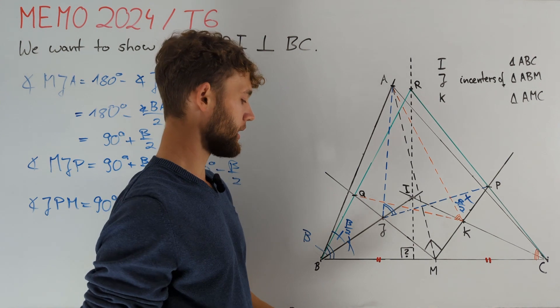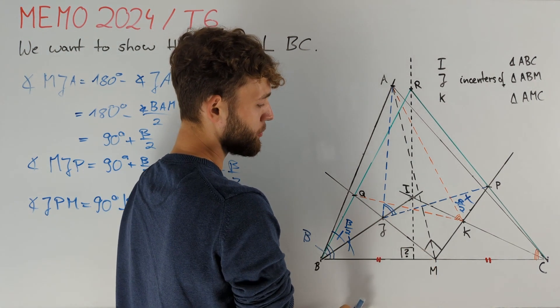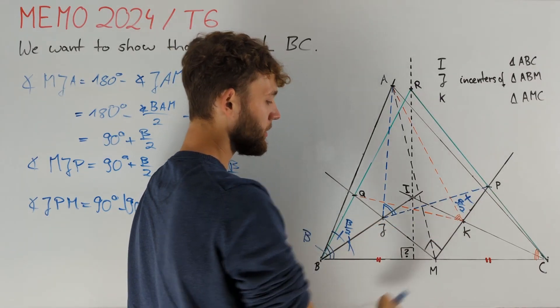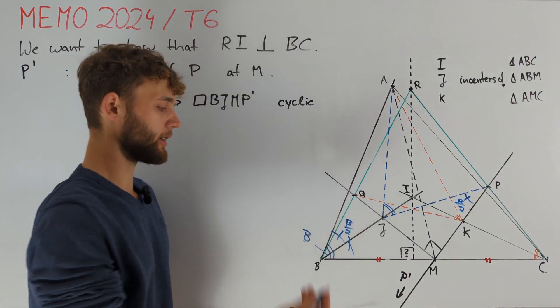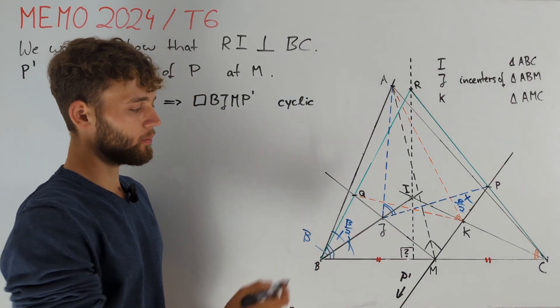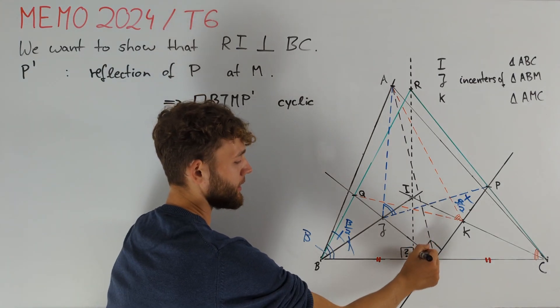Putting all of this together, we obtain that points B, J, M, and P' the reflection of P at M lie on a circle. Although we cannot quite fit this entire cyclic quadrilateral on the whiteboard, we can notice about it that it also has a right angle here, namely JMP'.